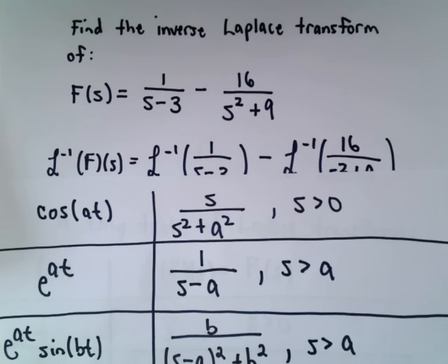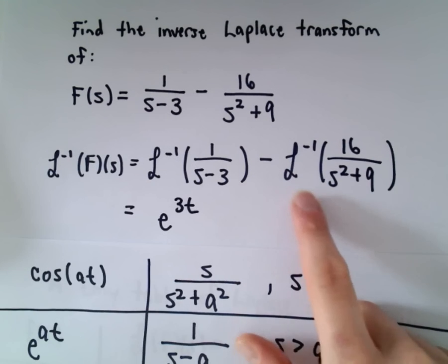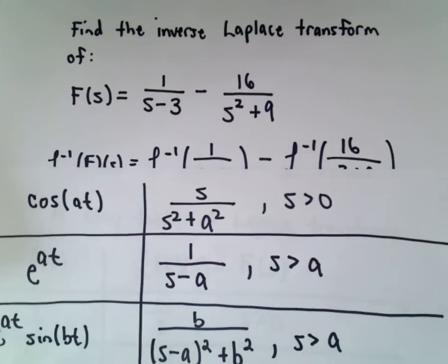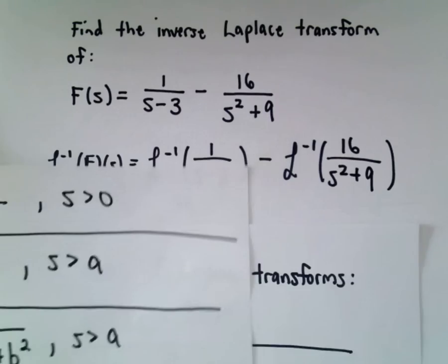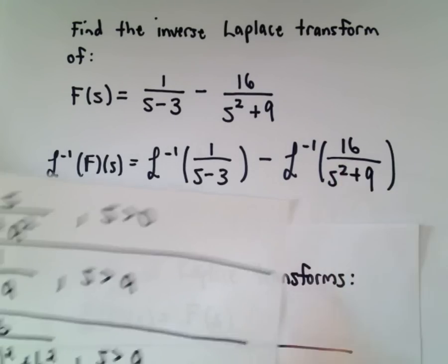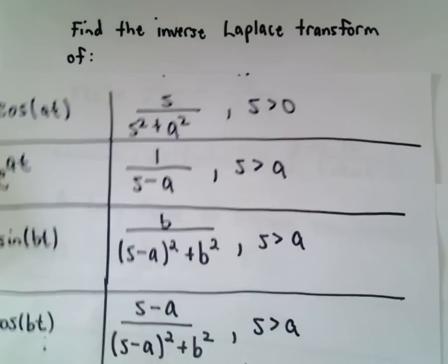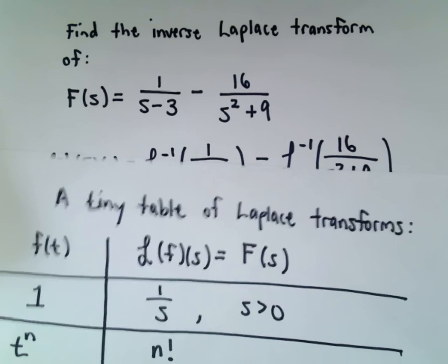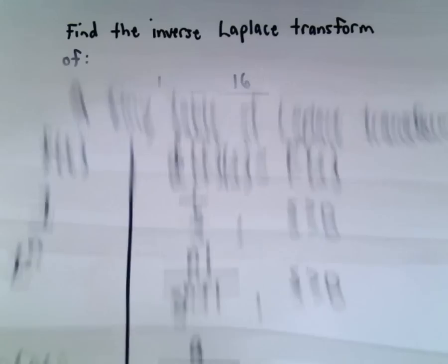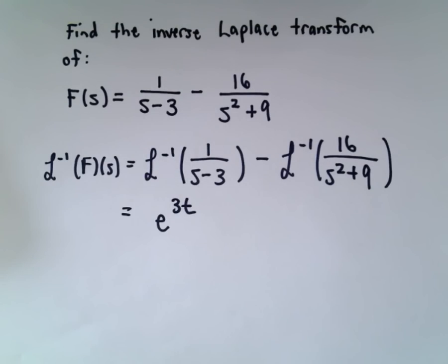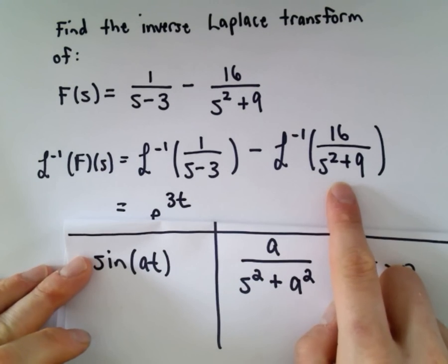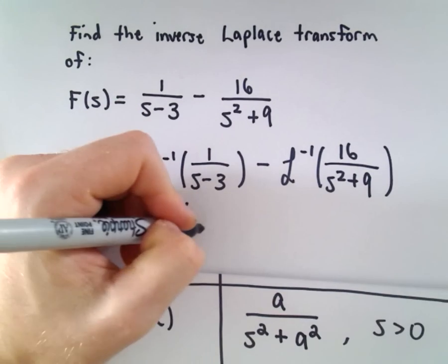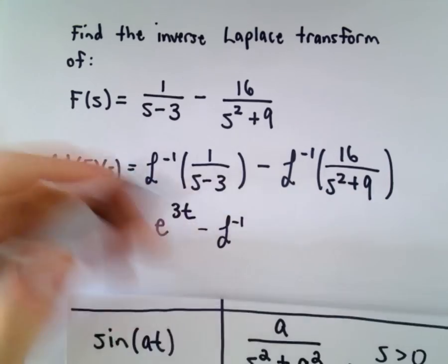Then we're doing the inverse Laplace transform of 16 over s squared plus 9. Notice we've got our variable squared and a number. Cosine has the variable squared and the number squared, so I don't think that is what we need. But notice we can use our sine of a t formula. This expression 16 over s squared plus 9 looks a lot like a over s squared plus a squared, and we're gonna have to do a little bit of algebra to make that happen.